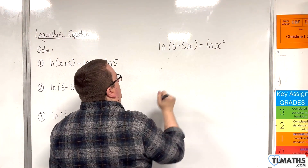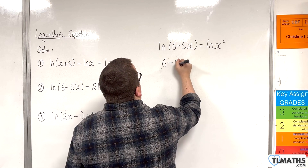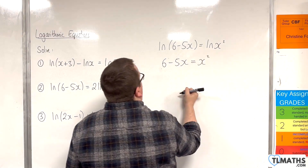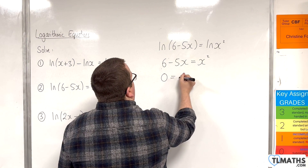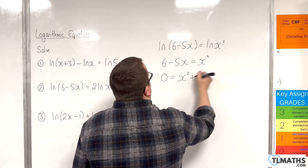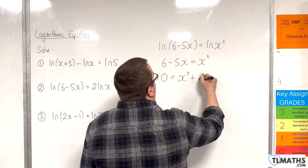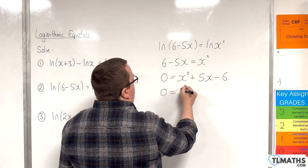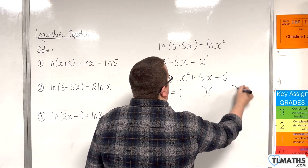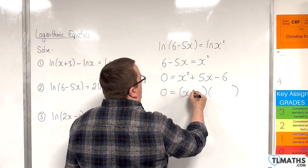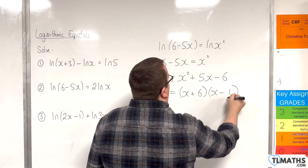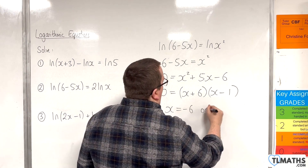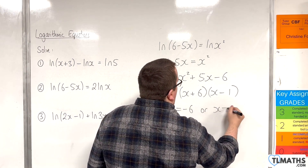Then we raise e to the power of both sides, giving us 6 take away 5x is equal to x squared. Moving everything onto the right-hand side, we get x squared plus 5x take away 6. Factorising the right-hand side gives x plus 6 times x take away 1, so either x equals minus 6 or x equals 1.